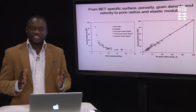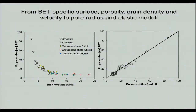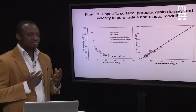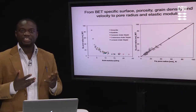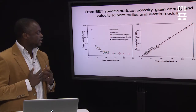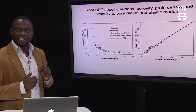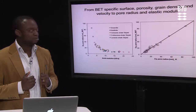We can predict equivalent pore radius from laboratory data of specific surface — BET specific surface — porosity, and grain density. We got artificially consolidated samples of kaolinite and smectite mixed in different proportions, and then natural samples from Skjold-Flanguan where we did laboratory measurements. From this laboratory data, we calculated equivalent pore radius and cross-plotted it with the bulk modulus calculated from the measured velocity.